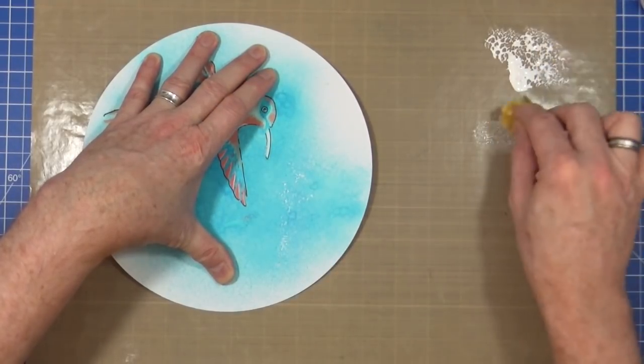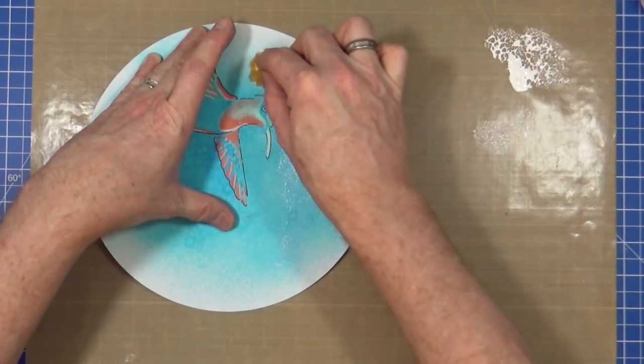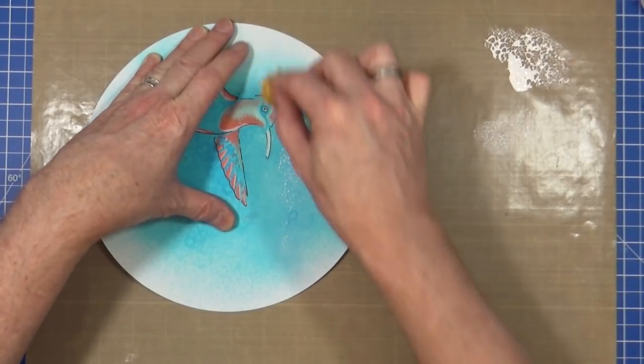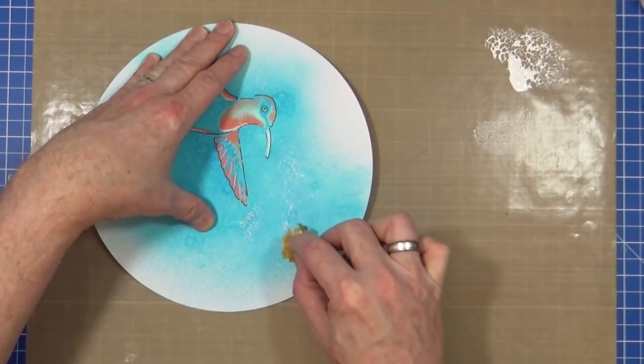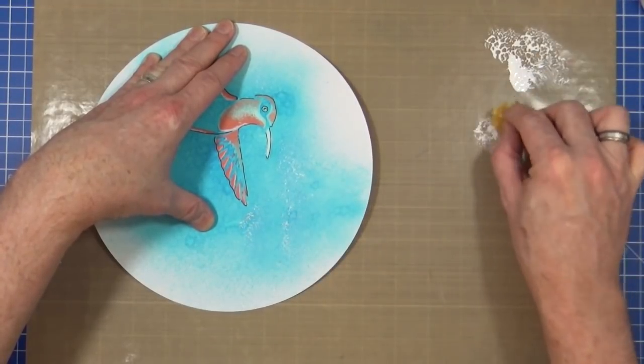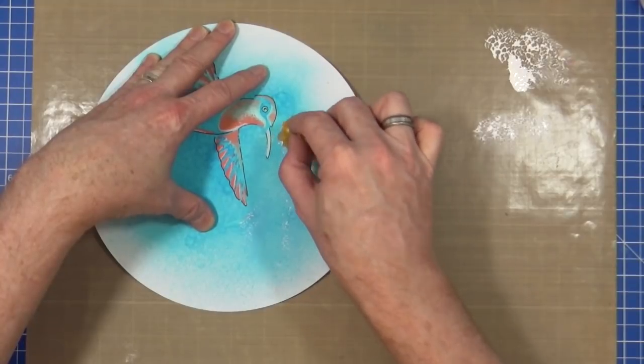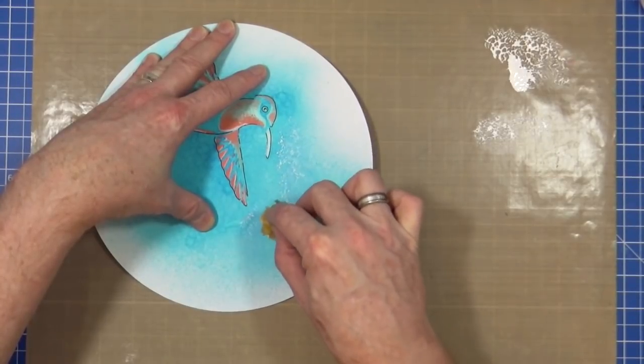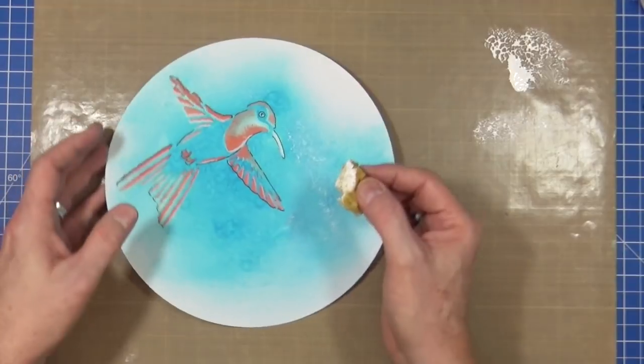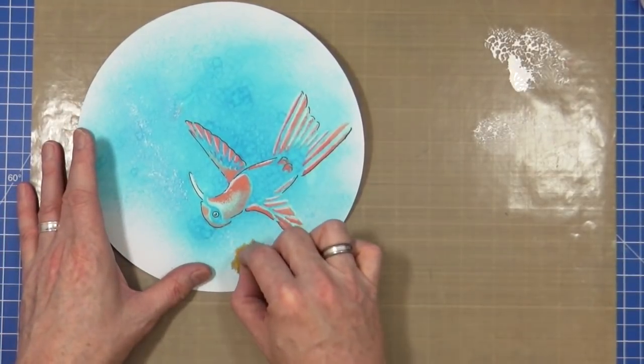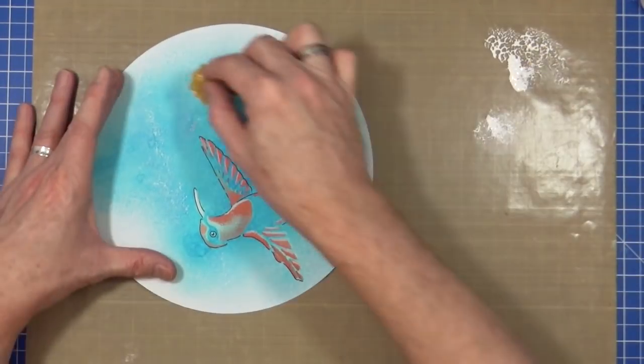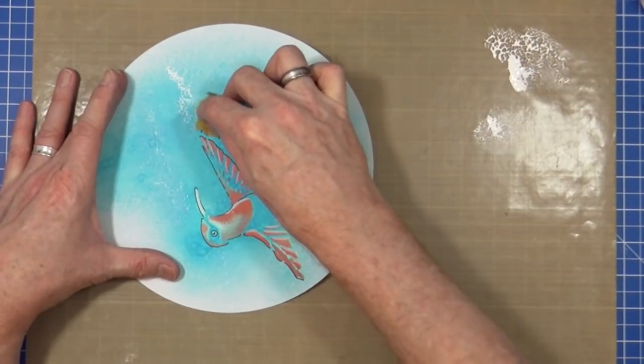As you can see it's extremely light. It's a subtle effect. And because we've got that spritzer on the page and there's a little bit of water in there as well, it probably will pick up a little bit of that colour.